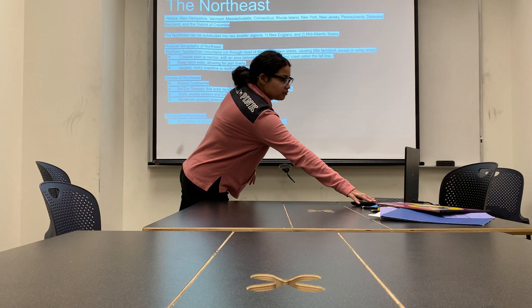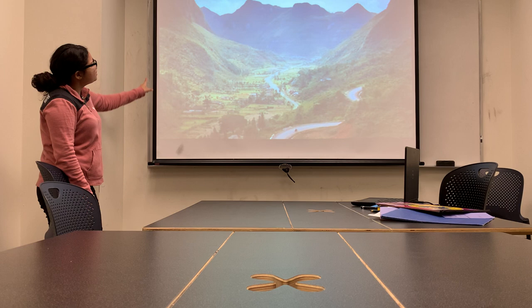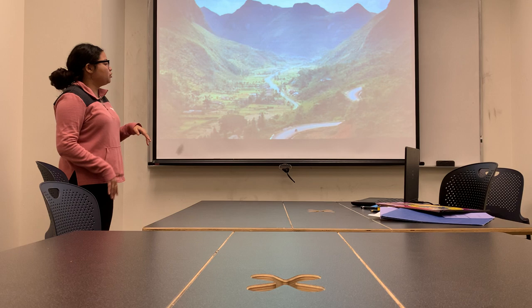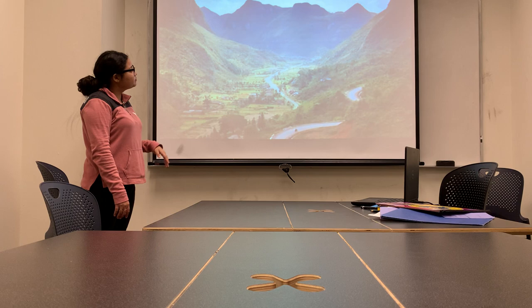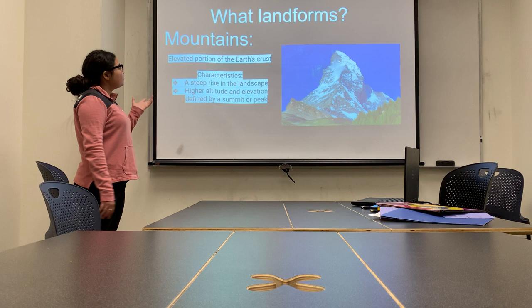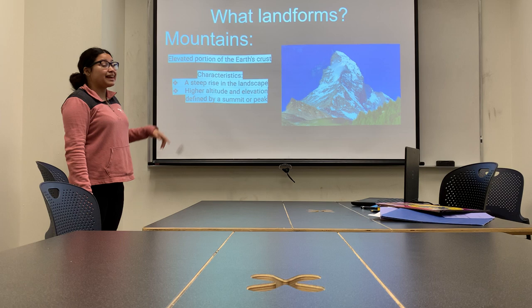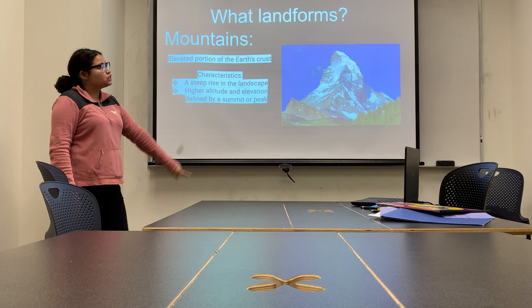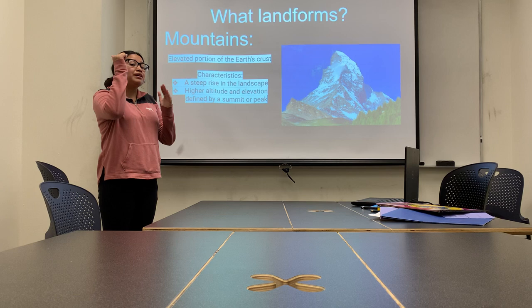This is a picture of how the Northeast region looks — we can see mountains that are highly elevated with a peak, a lot of forestry and trees, and some valleys. Mountains are the landforms found in this region. A mountain is an elevated portion of the Earth's crust with a steep rise in the landscape, high altitude, and elevation defined by a semi-sharp peak. If it does not have a peak, it is not a mountain.